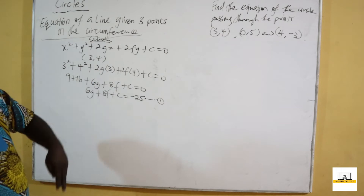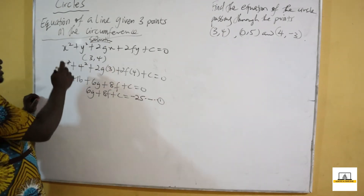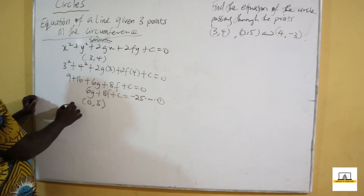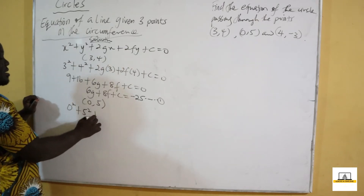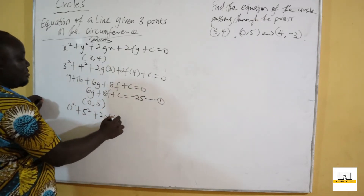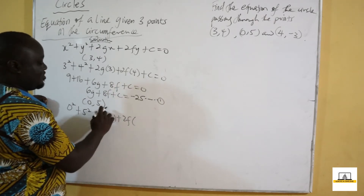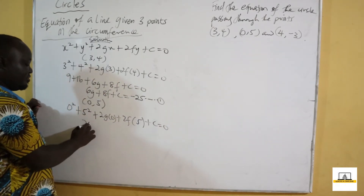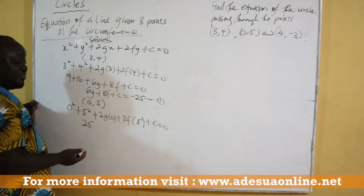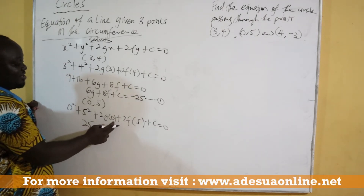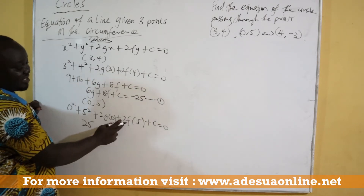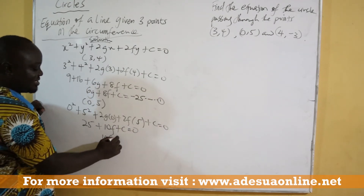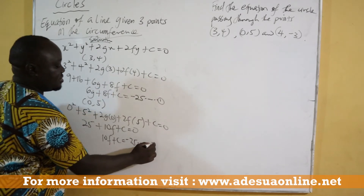Next, substituting X equals 0, Y equals 5: 0 squared plus 5 squared plus 2G times 0 plus 2F times 5 plus C equals zero. This gives 25 plus 10F plus C equals zero, so 10F plus C equals minus 25. This is equation 2.